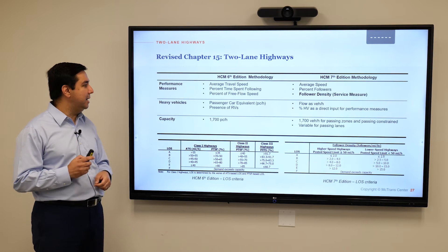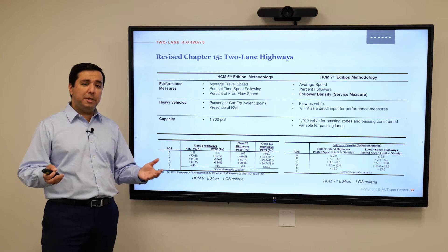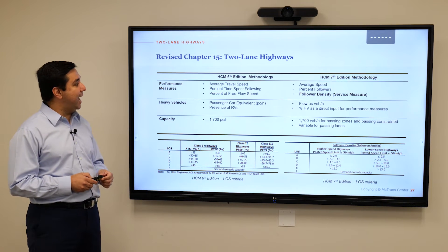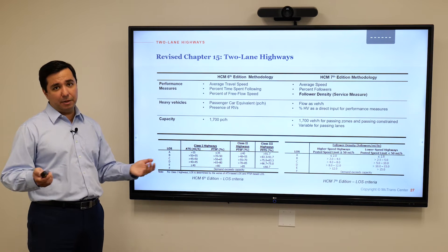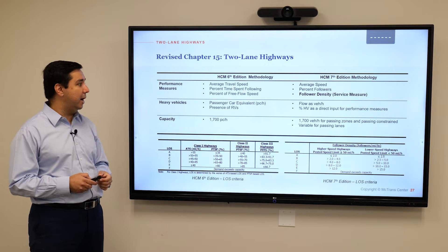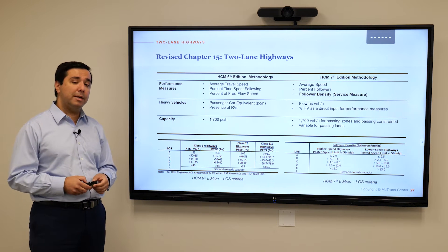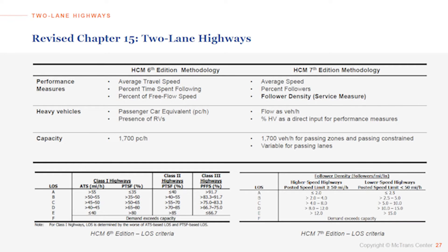Speaking of performance measures, we now have a new performance measure called follower density, which is also our service measure that determines the level of service on two-lane highway segments as well as facilities. Previously, we had three other service measures corresponding to the three classifications of two-lane highways — all of that is gone. Follower density is what we need to focus on from now on. Of course, beside follower density, this new methodology is also able to produce other performance measures as MOEs.